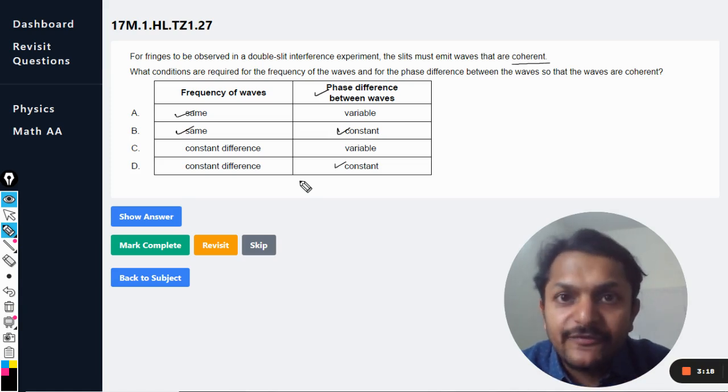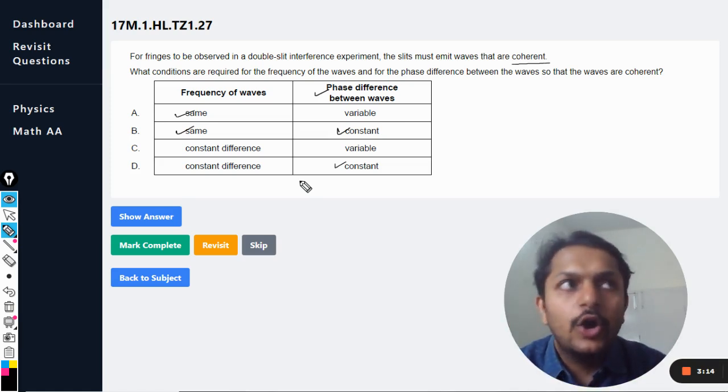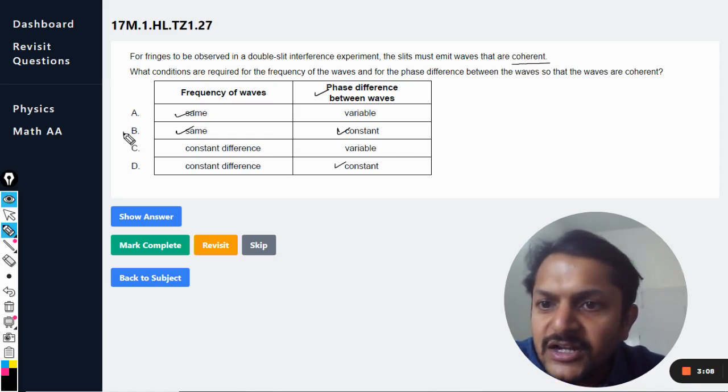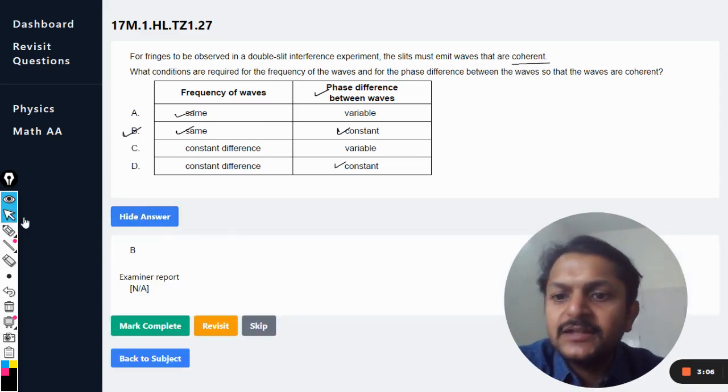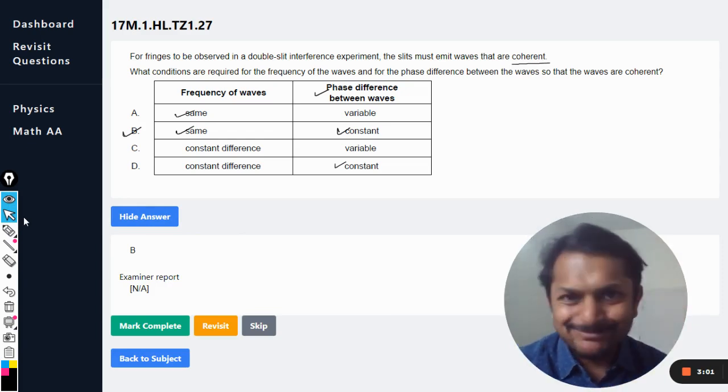If it is a variable phase difference, then there will be no pattern that would be visible. Only the light will be there; the pattern vanishes. So my students, for the coherent sources, the condition is B, and that should be the answer given in the mark scheme. This is how we do this question. All the best, bye!